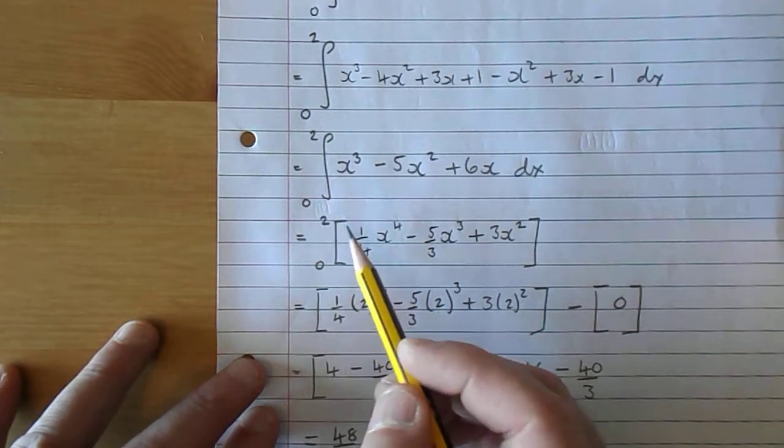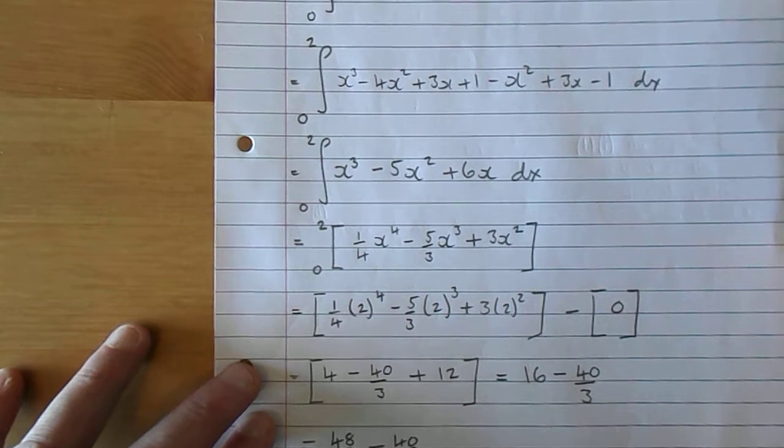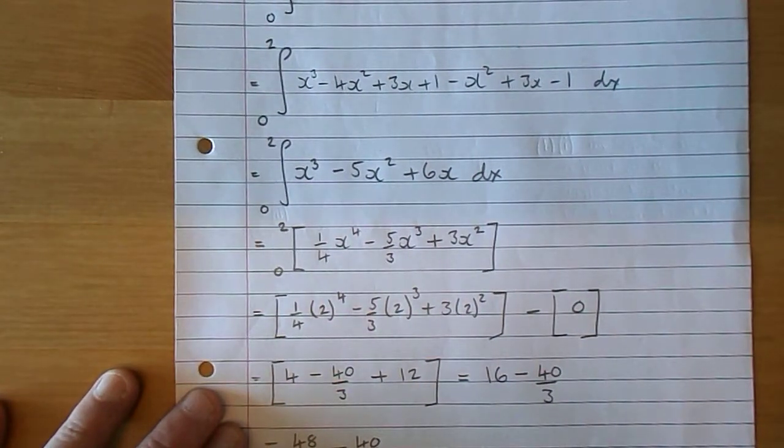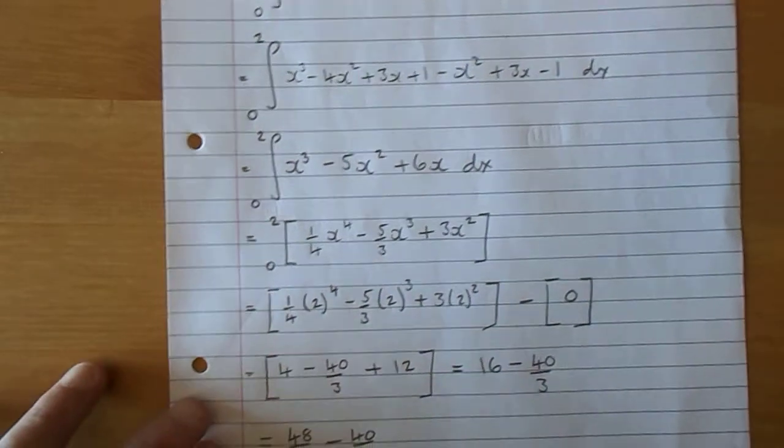So to show that you've integrated, I just change to the big square brackets. X cubed is a quarter x to the power of 4, minus 5x squared is minus 5 over 3x cubed, plus 6x becomes 3x squared.